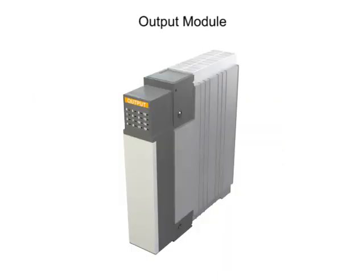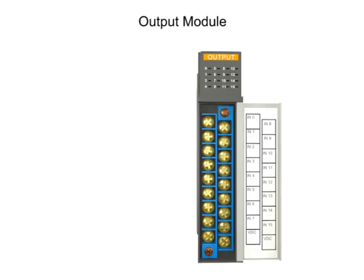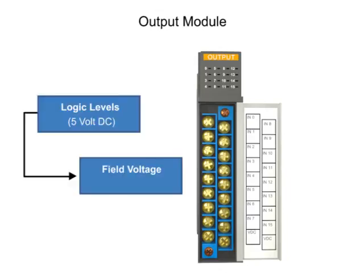Output modules perform the same function, but in reverse order, where 5-volt DC is converted to field voltages to control devices, such as 120-volt relay coils.